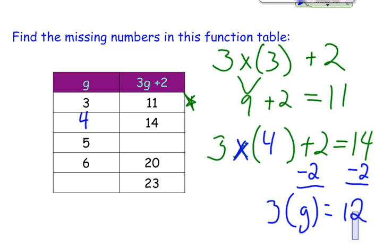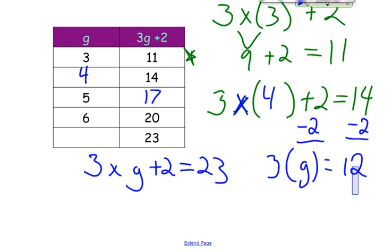This time we just have to plug it in. So 3 times 5 gives us 15, plus 2 gives us 17. And once again, we have 3 times a g plus a 2 equals a 23. As we look at this, we can say I'll just subtract this 2. Subtract 2 from both sides. That leaves me with 3 times a g equals 21. That means that this must be 7, because 21 divided by 3 equals 7. So we have these examples that show us how to work with the function tables.